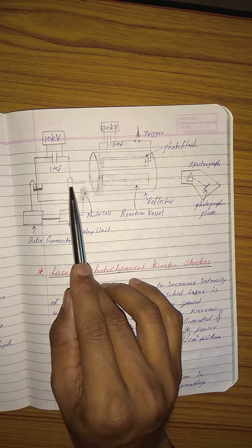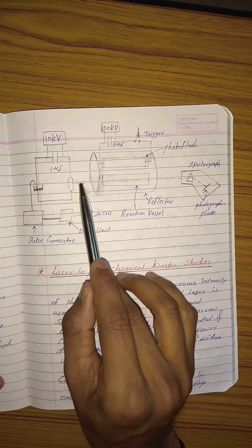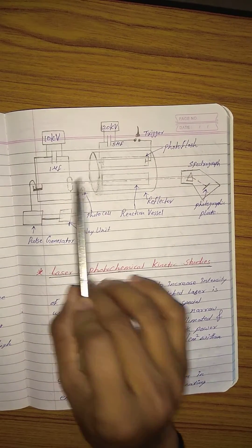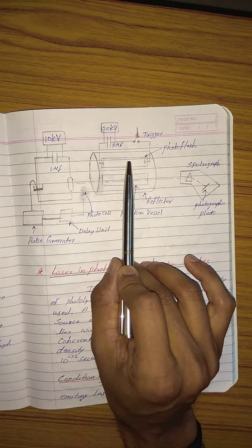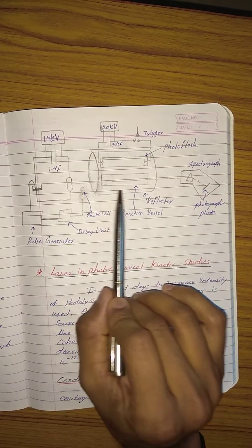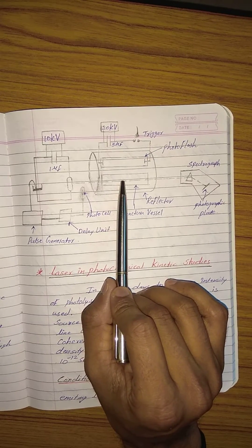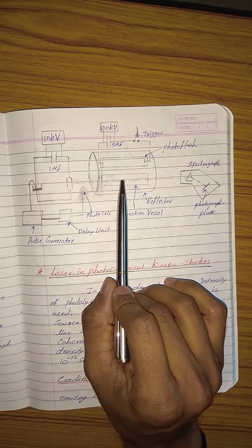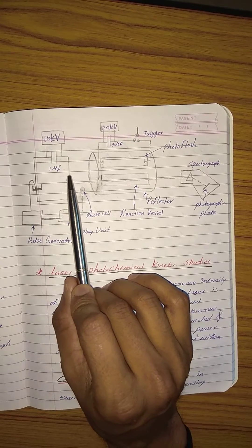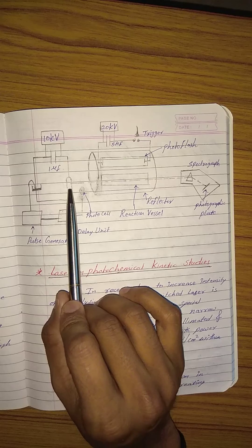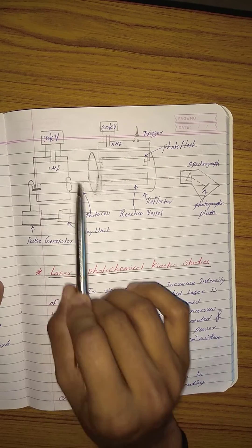This single beam absorption spectroscopy is somewhat like a colorimetric instrument. This is a secondary light, and this is a primary flash light. Using this primary flash light, the reaction is carried out in this reaction vessel, and the concentration of intermediates generated is measured using this secondary light generated by this particular bulb.